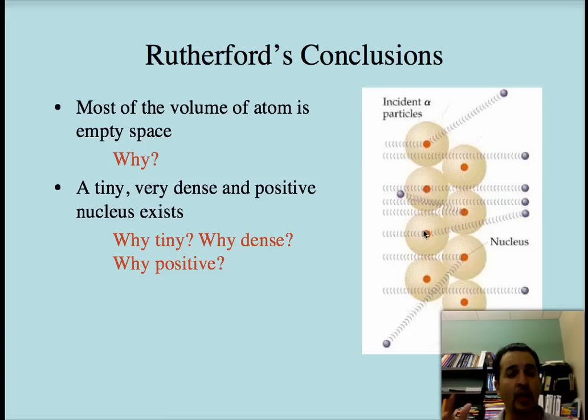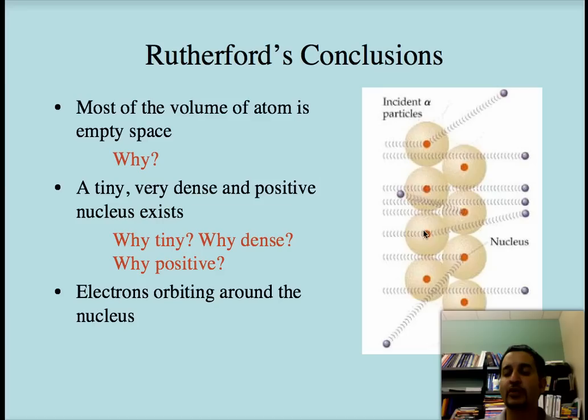And finally, he says the electrons are orbiting around the nucleus. And once again, why do you think this is so? Try to use your logic, your critical thinking, going back to the results that he got. And why do they necessitate these particular conclusions?